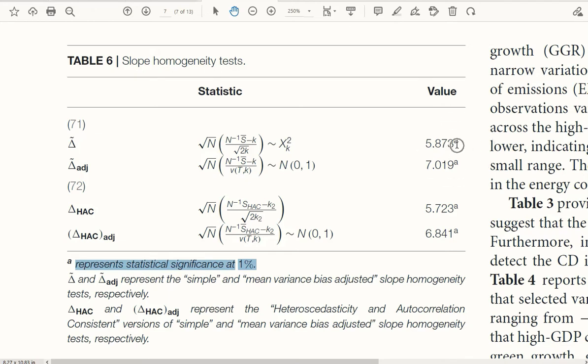This is the value, all those values of the statistics. You can see they are statistically significant at 1%. So how we can get these values, let us see.